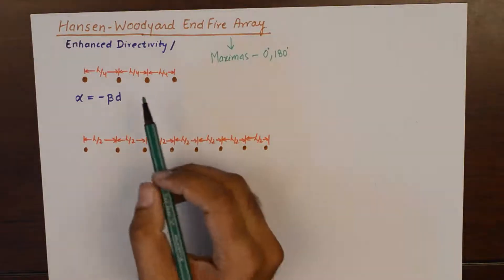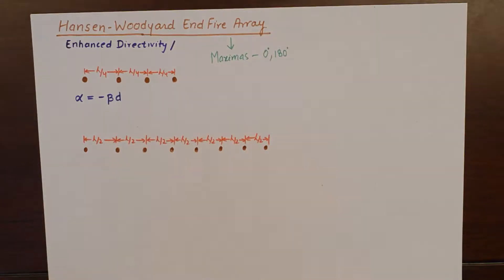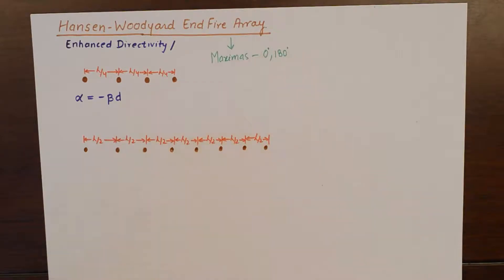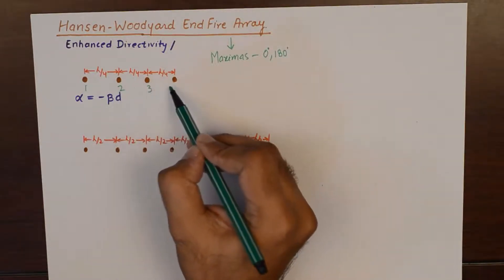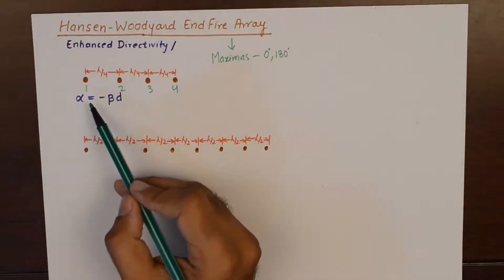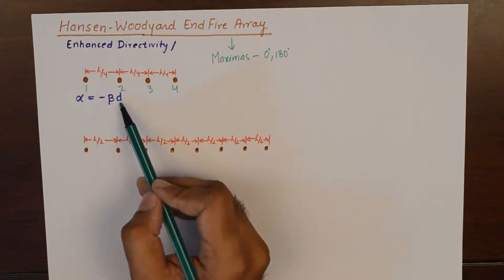Now, if we consider a case of 4 point sources for an end-fire array with a spacing of lambda by 4, the progressive phase shift between the elements going from 1 to 2 to 3 to 4 can be found out using a simple technique or formula that says the progressive phase shift should be equal to minus beta d.